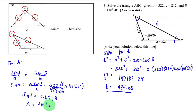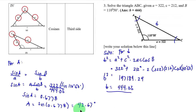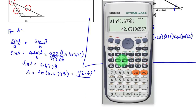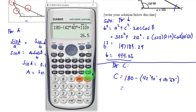Solving for angle A: angle A is the inverse sine of 0.6778, which equals 42.67 degrees, or written as 42 degrees 40 minutes. Then lastly for angle C: 180 minus angle A (42 degrees 40 minutes) minus angle B (110 degrees 50 minutes) equals 26.5 degrees, or 26 degrees 30 minutes.